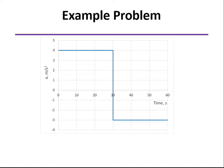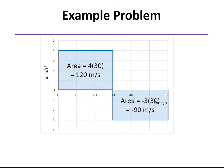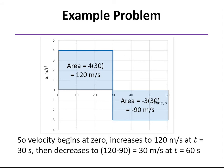Now, let's look at the areas under the curve. This first rectangular region, it's 4 meters per second squared times 30 seconds. So you can see the units are units of velocity, 120 meters per second. The negative area is 3, is the deceleration rate times 30 seconds, so it's a negative 90 meters per second.